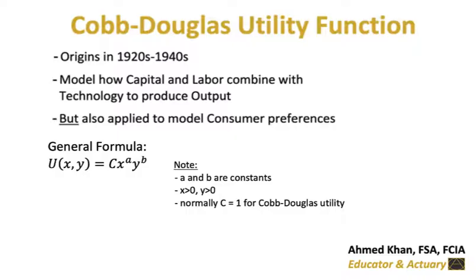Also, that big capital C is normally one when you're talking about Cobb-Douglas utility. When you're doing Cobb-Douglas production functions, then that represents the efficiency of how technology is combined with capital and labor to produce output.